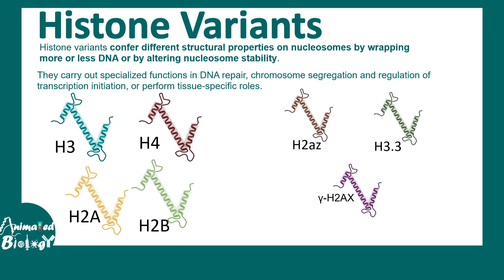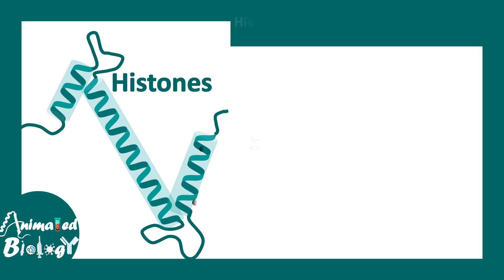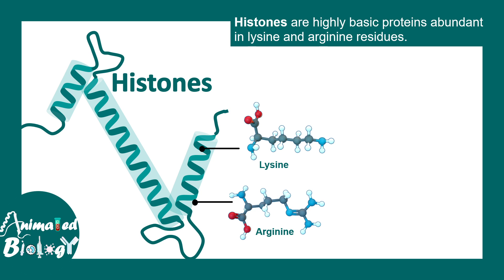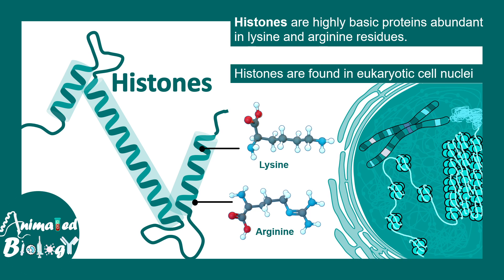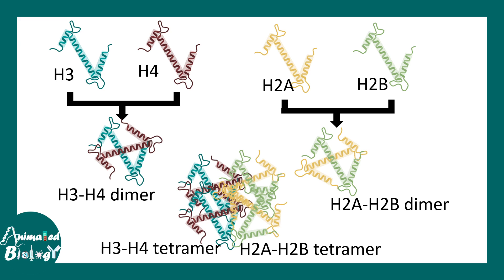Let's build up from basics. Histones are basic proteins having the amino acids lysine or arginine. They are found in the nucleus of eukaryotic cells, where they are part of the nucleosome. H3 and H4 form a dimer, and H2A and H2B also form a dimer.